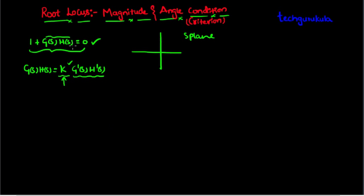We are plotting the roots of this equation when one of the parameters is varied — usually the k parameter. Any point present on the root locus must satisfy this equation, because it is derived from this equation.